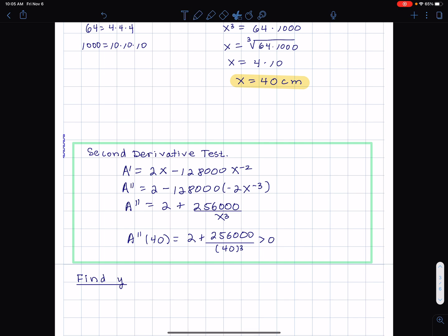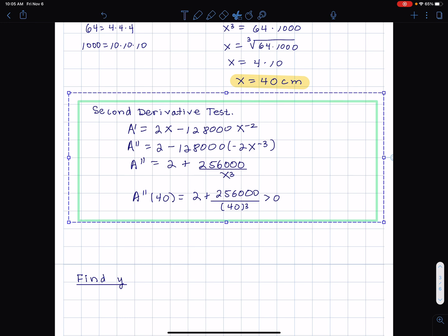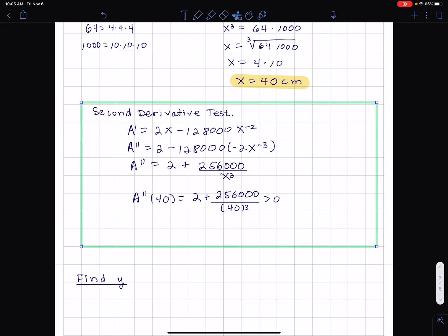Now A double prime at 40 is something that I'm not really keen on calculating, but I don't really need to calculate it at all. What I need to do is just notice that it's greater than zero. I can just see everything's positive there when I plug in 40. And so what that means is that, therefore, A is concave up. That is the conclusion from that, is that A is concave up near x equals 40. Therefore, x equals 40 is a minimum.